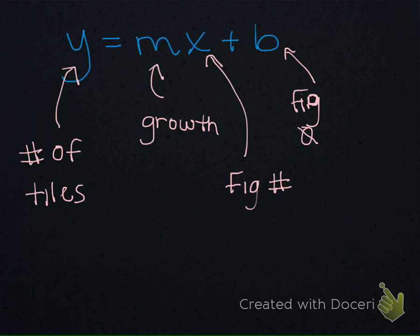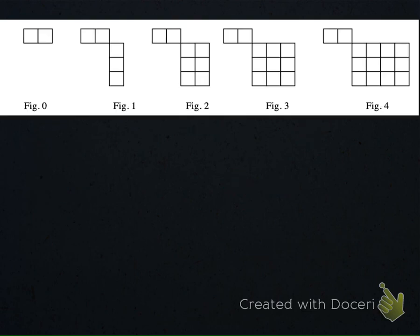So if we keep these things in mind, it's going to be really easy to write the rule for any tile pattern. Looking at our first tile pattern here, we know that figure 0 has two tiles. Figure 1 looks like this shape with five tiles, and figure 2 and so forth.